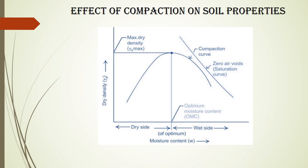This figure shows the compaction curve. Here we can see that moisture content is plotted along the x-axis and dry density along the y-axis. The moisture content corresponding to maximum dry density is known as the optimum moisture content. Also shown is the line representing 100% saturation, that is the zero air voids line or the saturation curve.